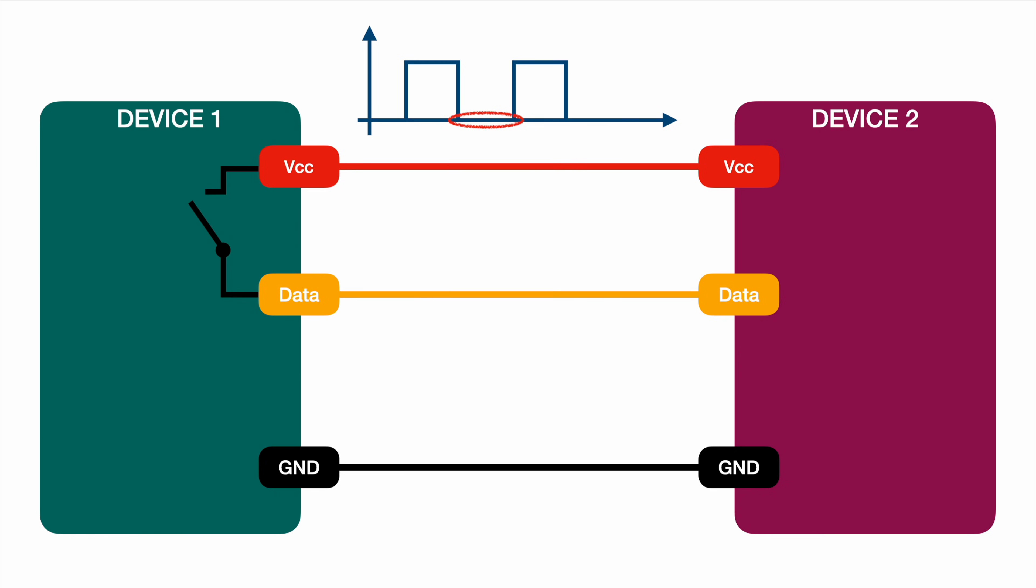So device two is not seeing this low level, it's actually seeing something in between. It could be this, but it could be also that. The point is that the data level, the signal, is undefined, it's floating.